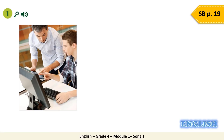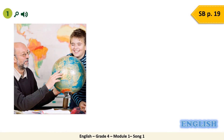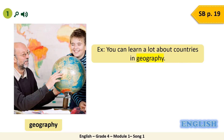Look at this picture. They are using the computer. Can you guess the subject? That's correct. The subject is IT. They are at the IT class. What is the part of speech of the word IT? Correct, it is a noun. Now look carefully at the next picture. The teacher is using the globe to explain something to the student. Can you guess the subject? It is geography. You can learn a lot about countries in geography. What is the part of speech of geography? Correct. It is a noun.